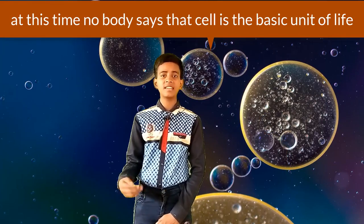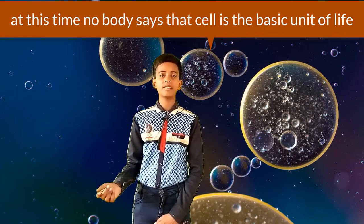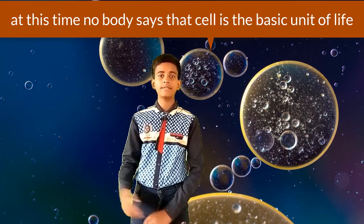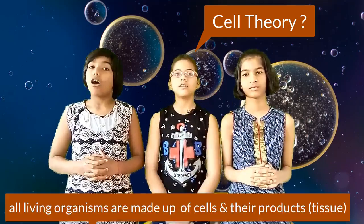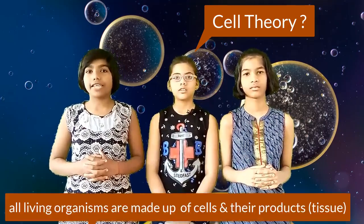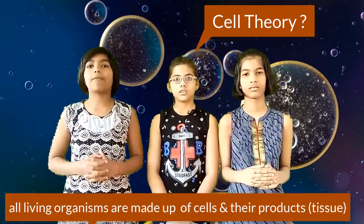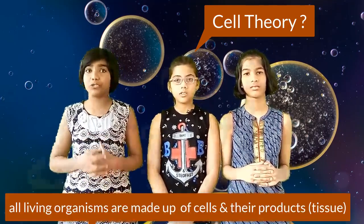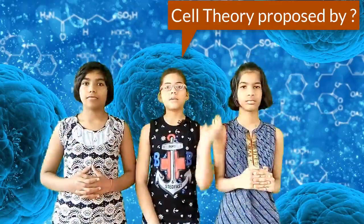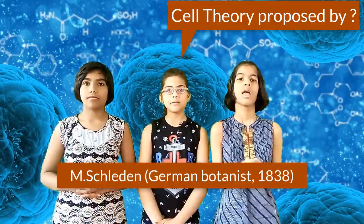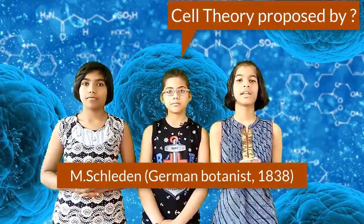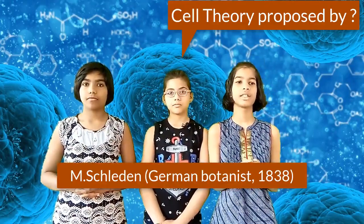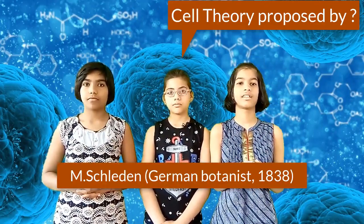At this time, nobody said that the cell is the basic unit of life. Cell theory states that all living organisms are made up of cells and their products — tissue. Cell theory was proposed by M. Schleiden, a German botanist, in 1838.